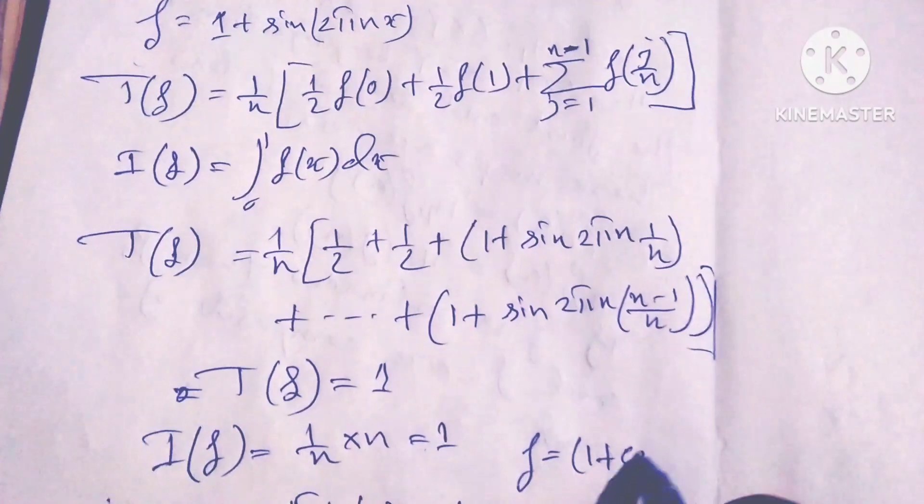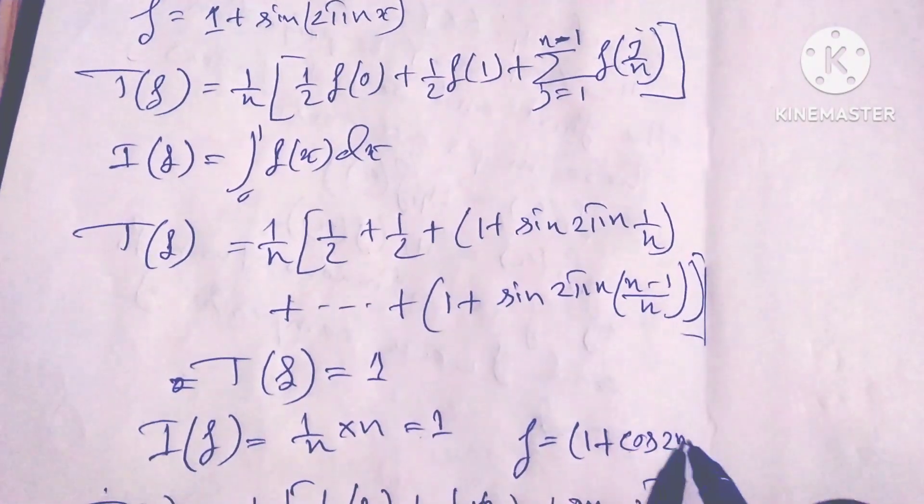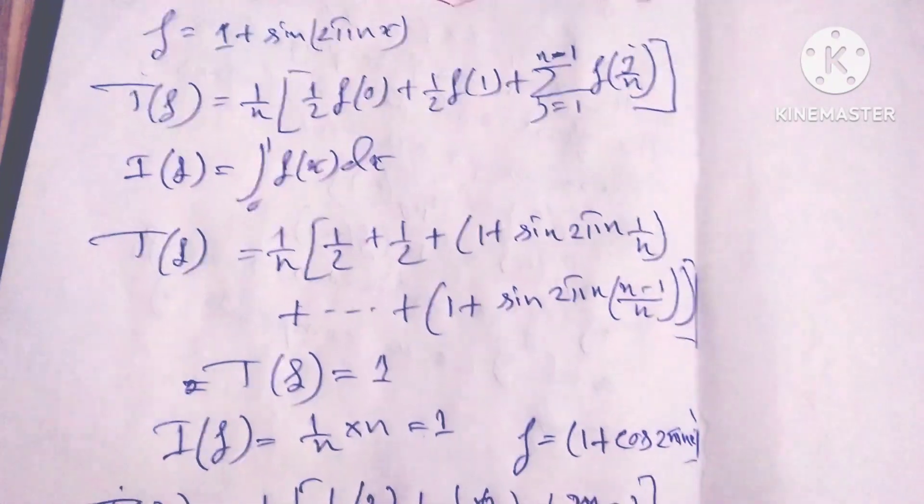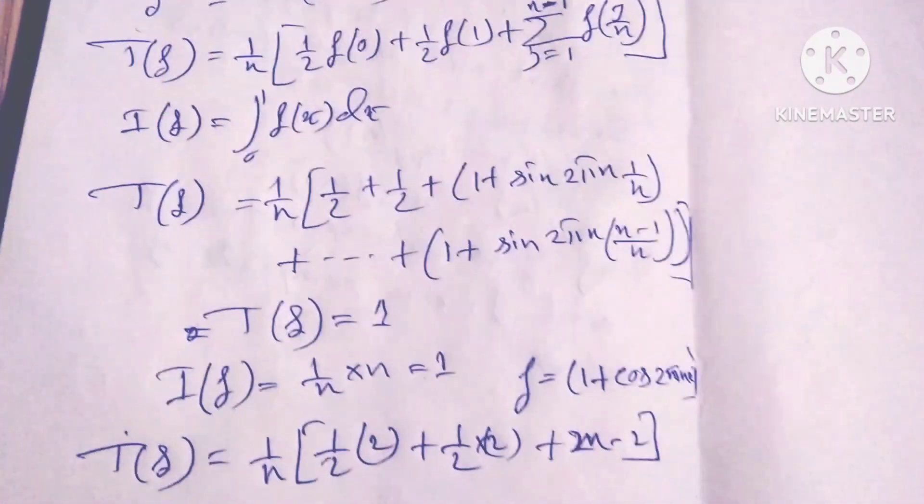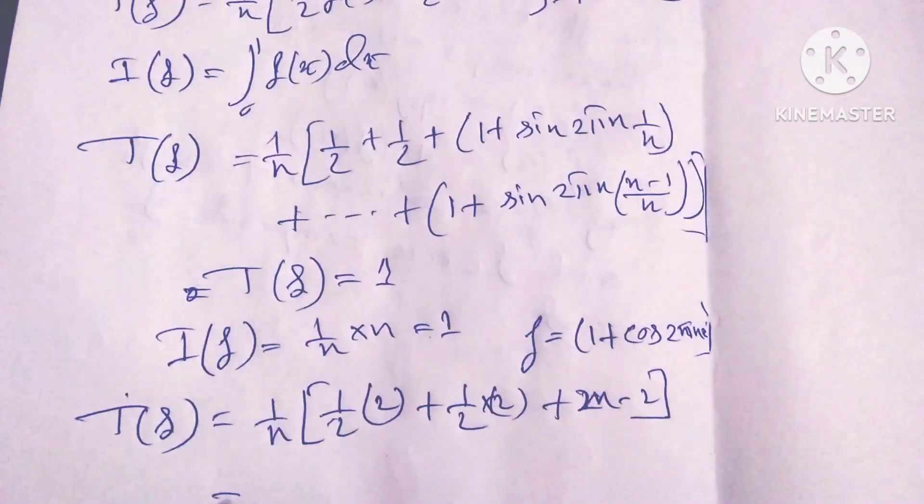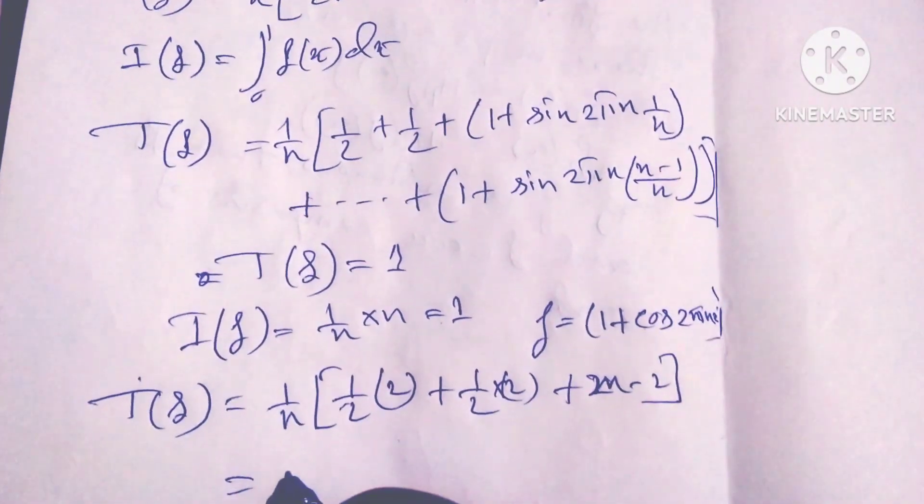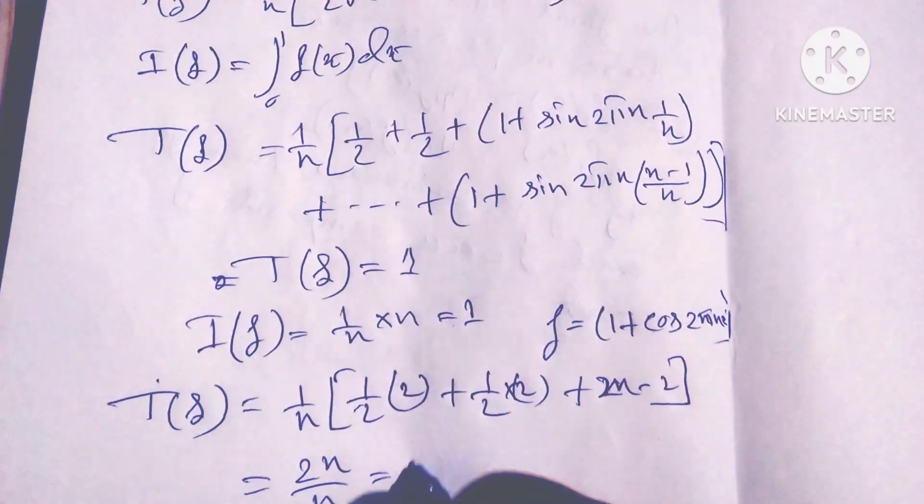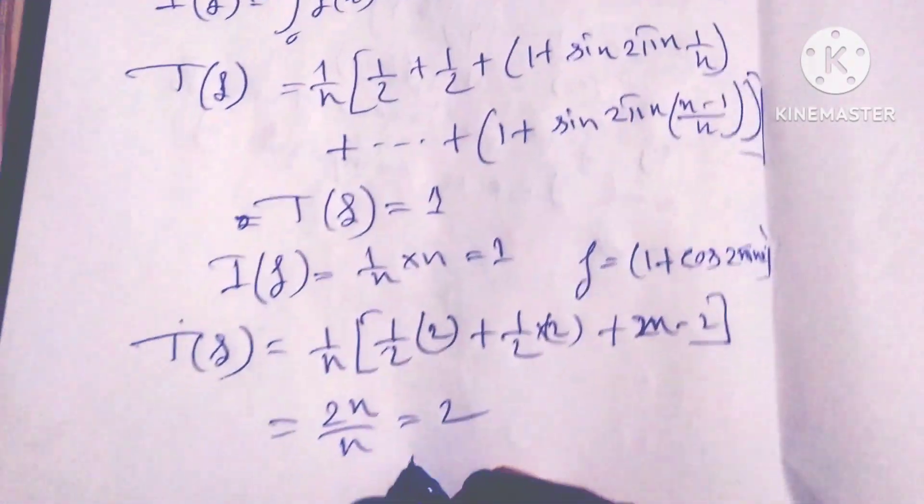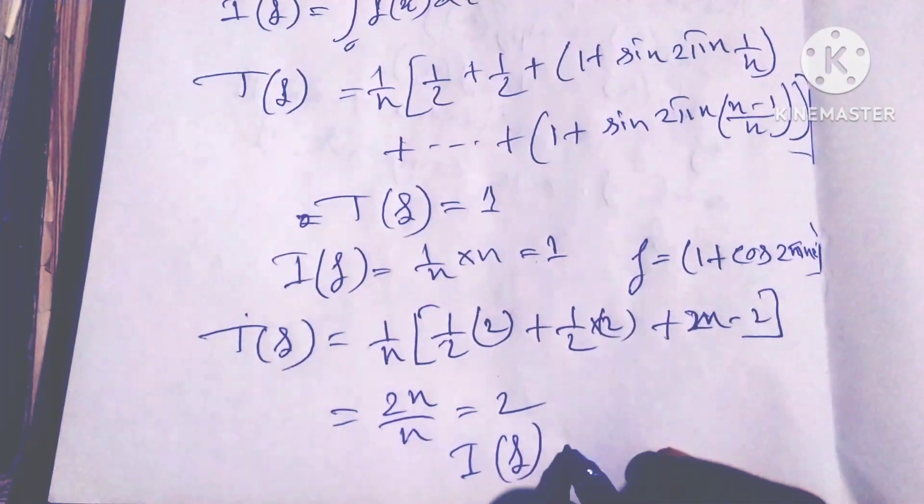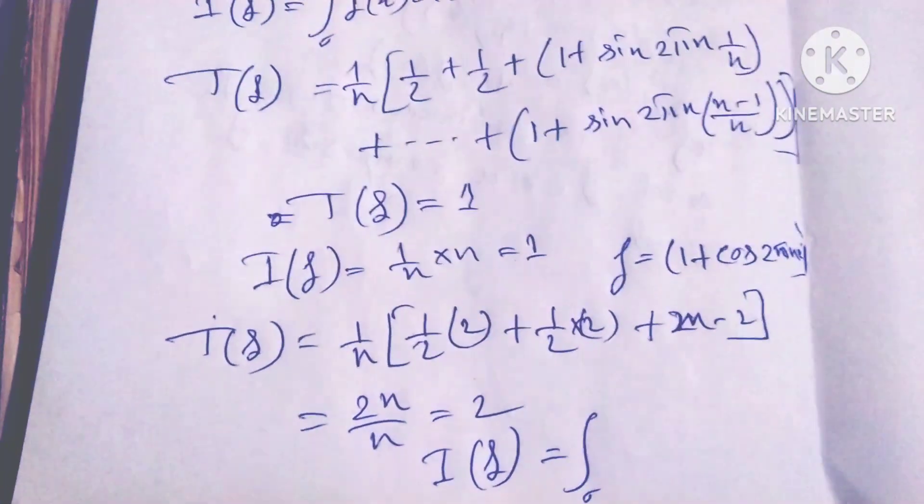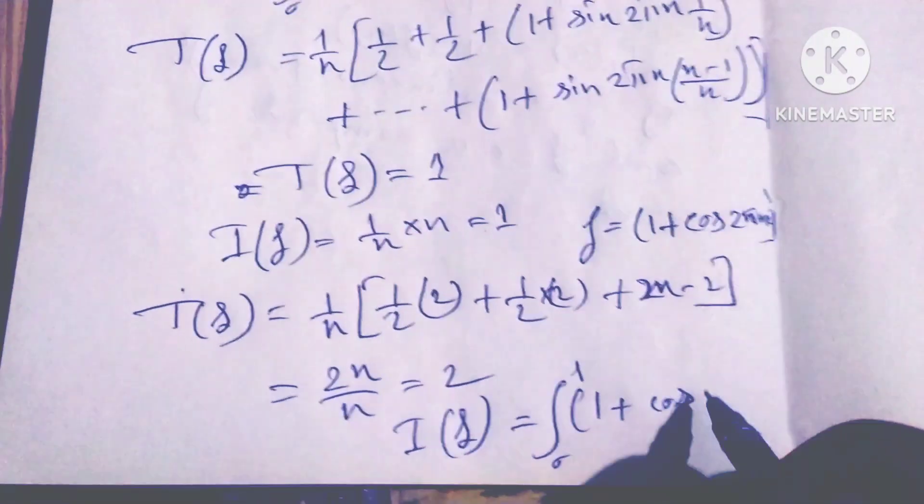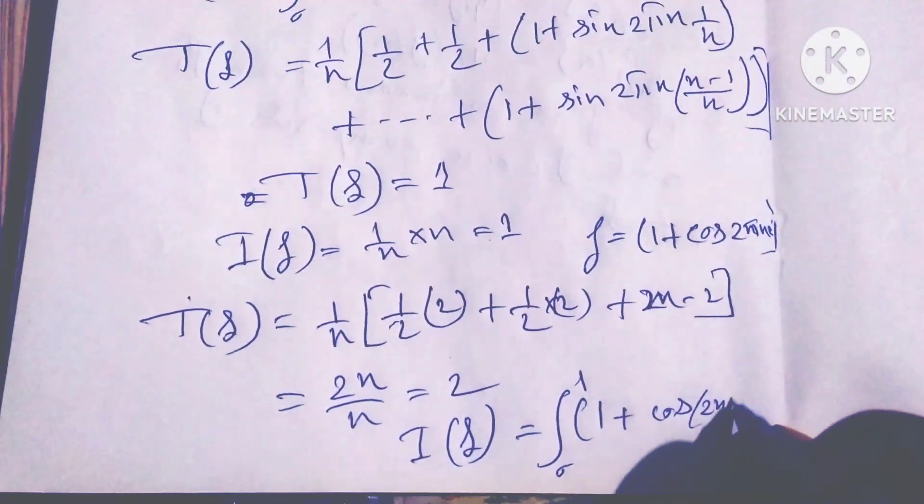When 1 plus cos 2πnx, so f is equal to 1 plus cos 2πnx. f(0) is equal to 1, so 1, 1, 2, and f(1) equals 1. So we get both sides, and after that we get the value is 2n by n and that value is 2.